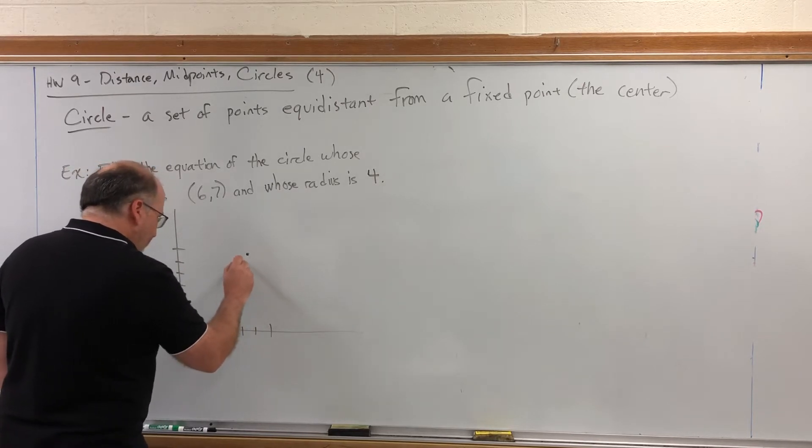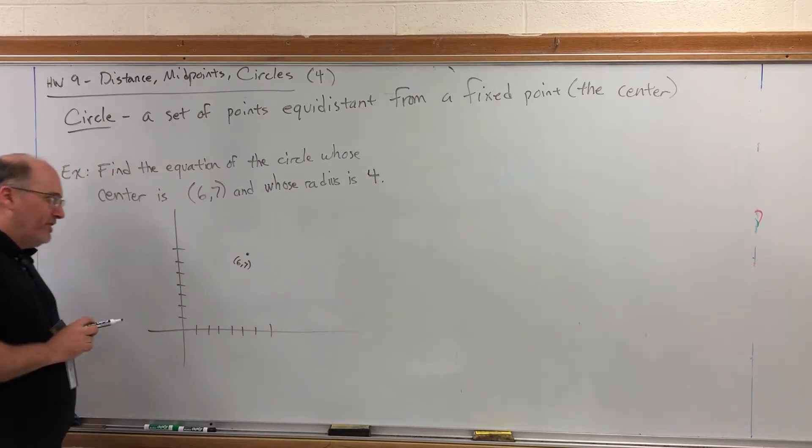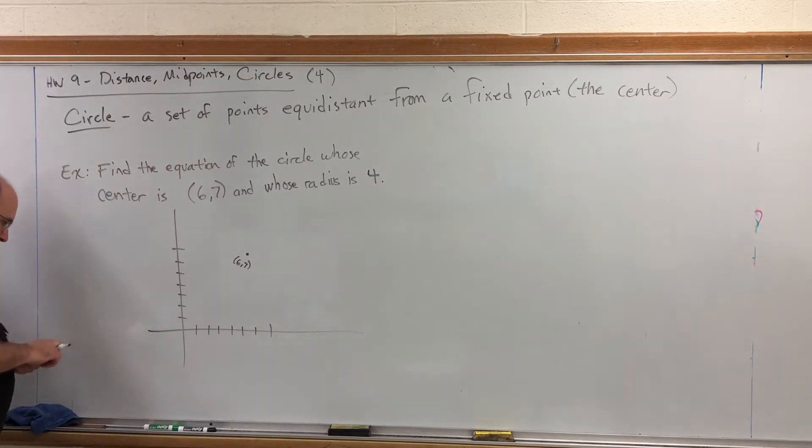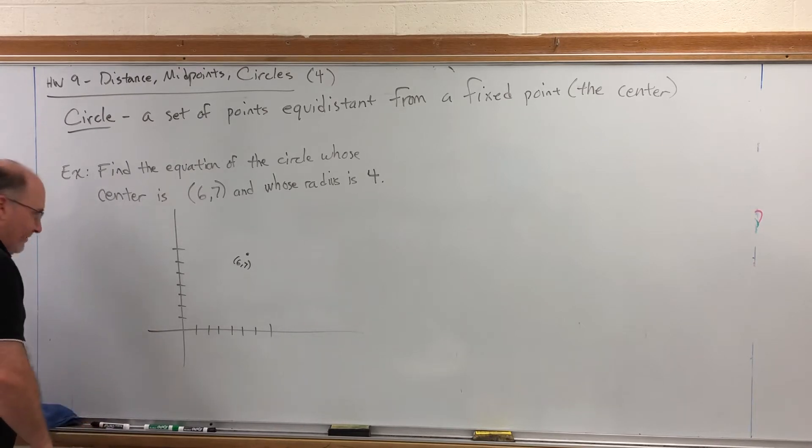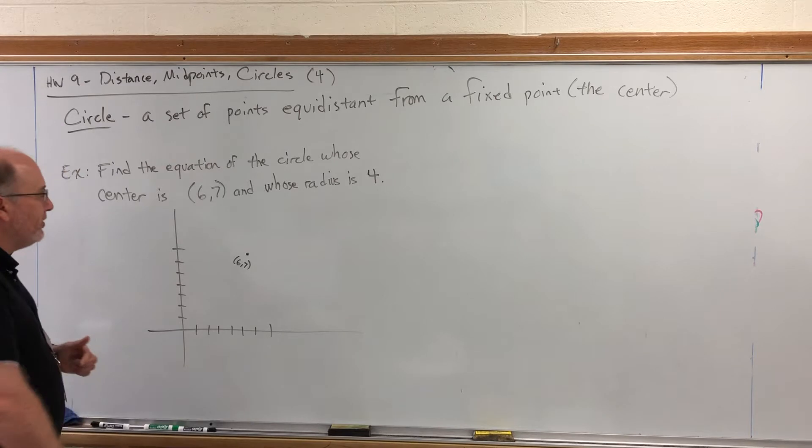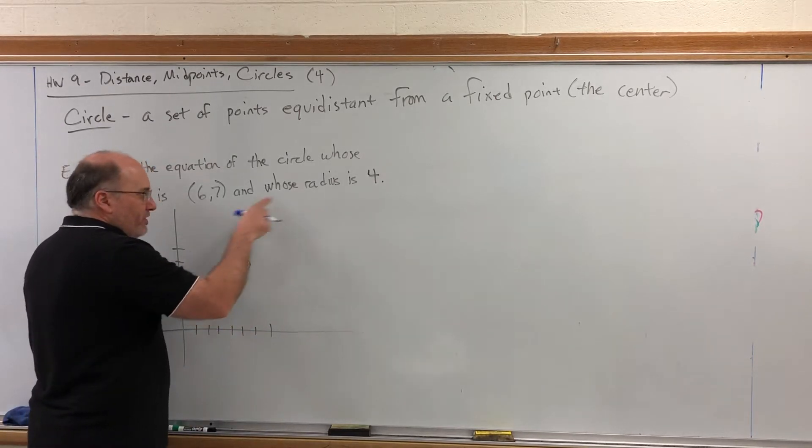(6,7) is about here. Try to put it out of the way because I know what's about to happen next. Now, believe it or not, that center is not part of the circle. That's just a feature that helps define the circle. To find the circle, we need to locate the points that are four spaces away from the center because the radius is 4.